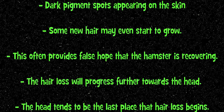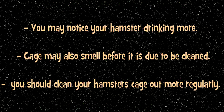As the next couple of months pass, much more hair will be lost. The hair loss will progress further down the head on both the back and the belly, with the head tending to be the last place where the hamster loses their fur. You may also notice your hamster drinking more and the cage beginning to smell before it is due to be cleaned out, due to extra urine production.